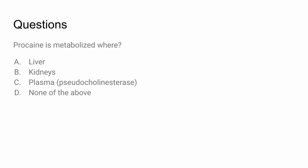Where is procaine metabolized? Procaine is an ester — it's not metabolized in the liver or the kidneys. It is metabolized by plasma pseudocholinesterase.